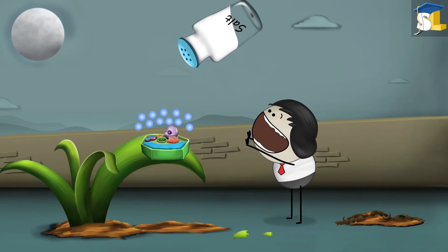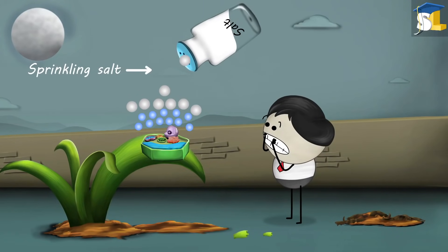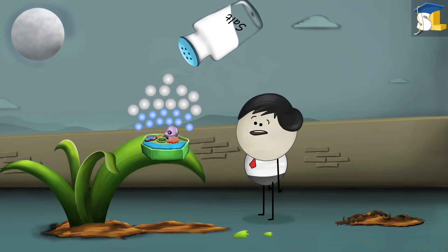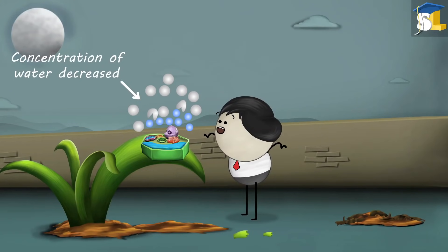However, when we sprinkled salt on the grass, the concentration of salt outside the grass increased and the concentration of water decreased.